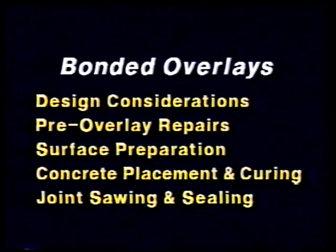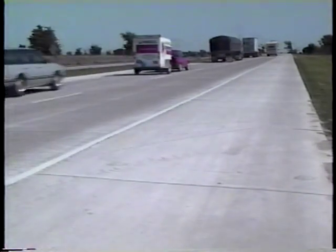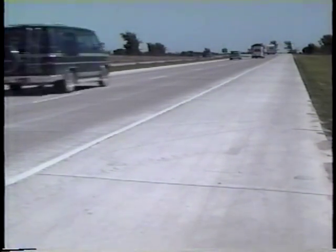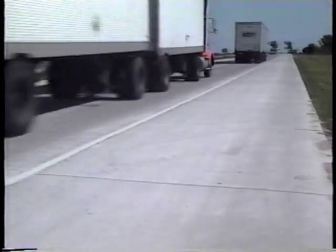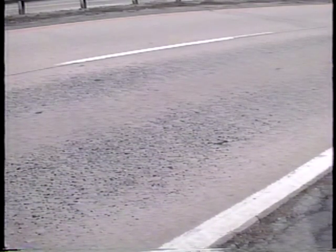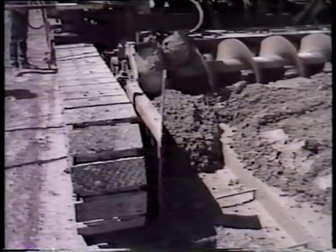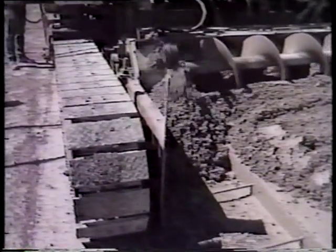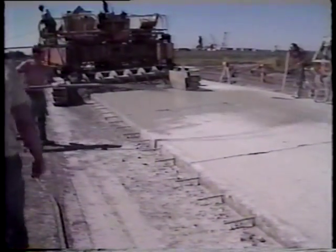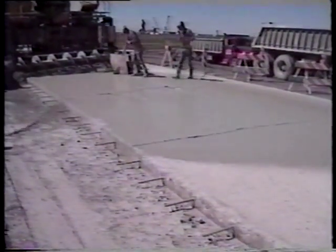Let's take a close look at the procedures for bonded overlays, beginning with design considerations. A bonded overlay increases the pavement's structural capacity, so it's particularly useful when truck traffic increases beyond the expected level. It also corrects surface problems such as severe roughness or low skid resistance. Bonding a relatively thin layer of concrete to an existing concrete pavement can greatly reduce the critical stresses in the slab. One of the keys to improving structural capacity is to provide a good bond between the overlay and the base concrete so that the two will act monolithically.